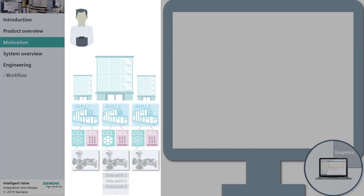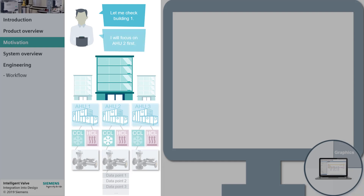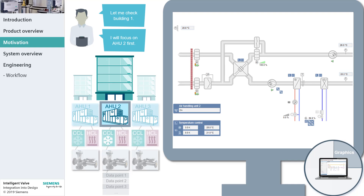It's a regular Wednesday afternoon, and Mike wants to check Building 1. In a first step, he focuses on Air Handling Unit 2. In the plant graphics, Mike gets an overview of the state of his air handling unit and immediately sees that there is an intelligent valve installed.